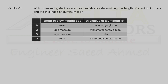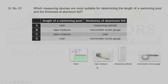Which measuring devices are most suitable for determining the length of a swimming pool and the thickness of aluminum foil? To find the length of a swimming pool, a tape measure is a better option than a ruler, so possible options are B and C. To find the thickness of aluminum foil, a ruler can only measure accurately to 1 millimeter, but aluminum foil is thinner than 1 millimeter, so we must use a micrometer screw gauge. Correct option is B.